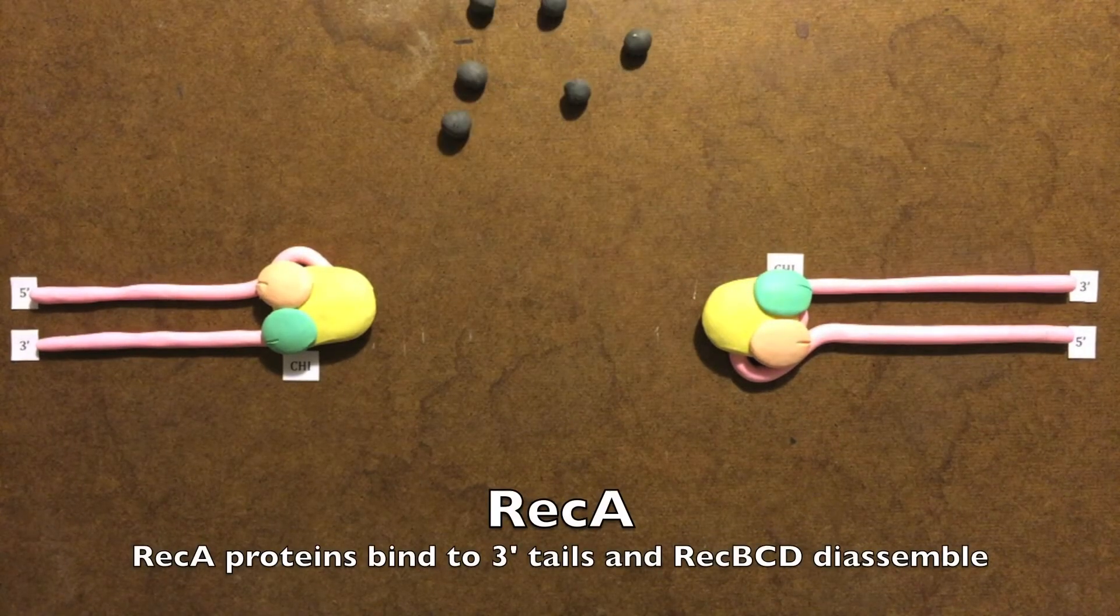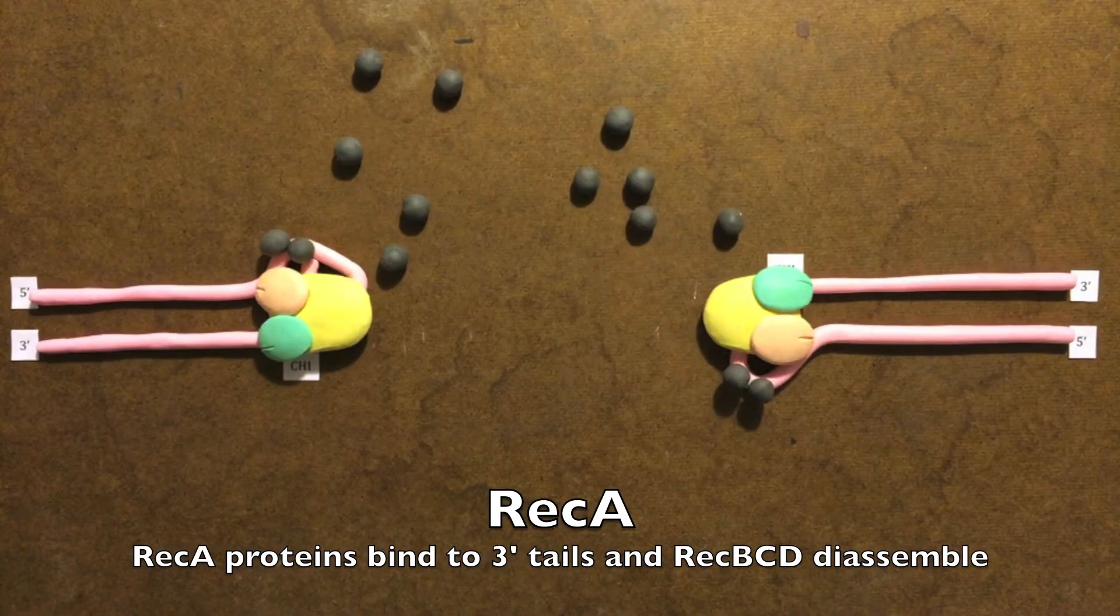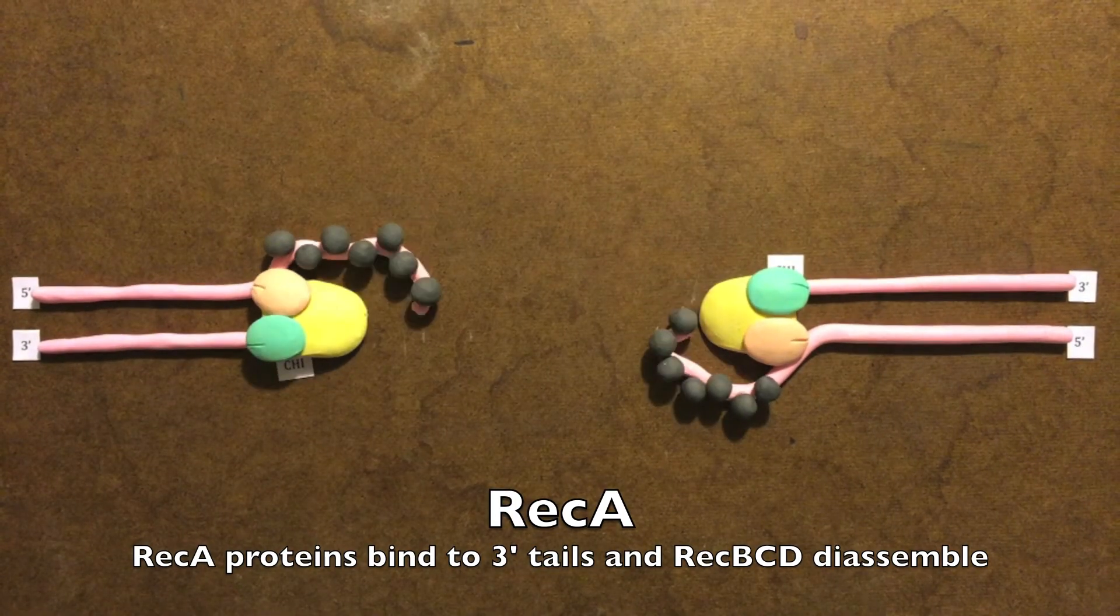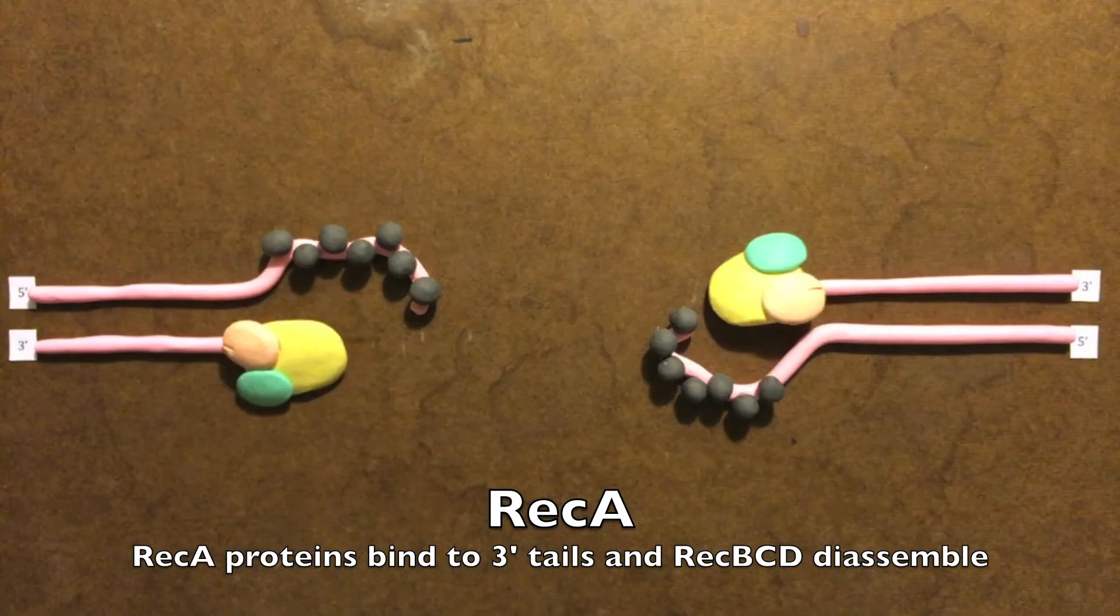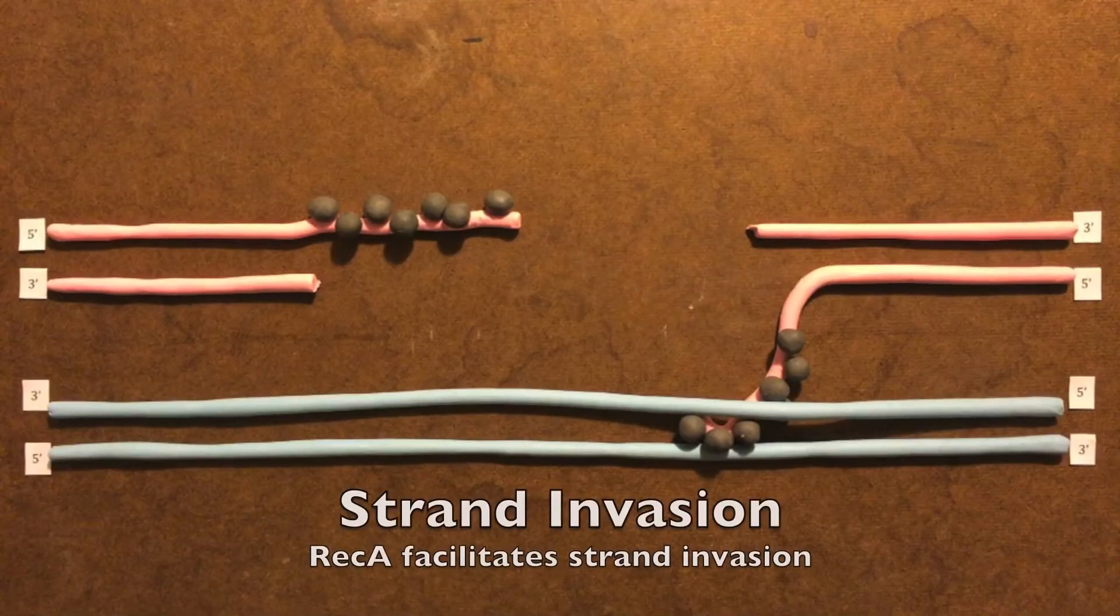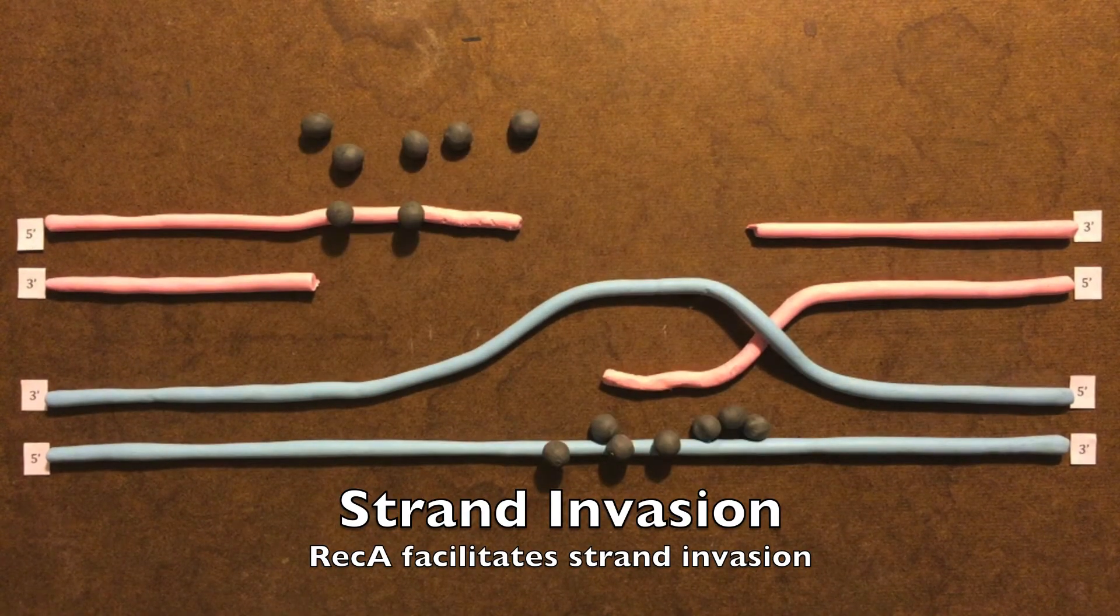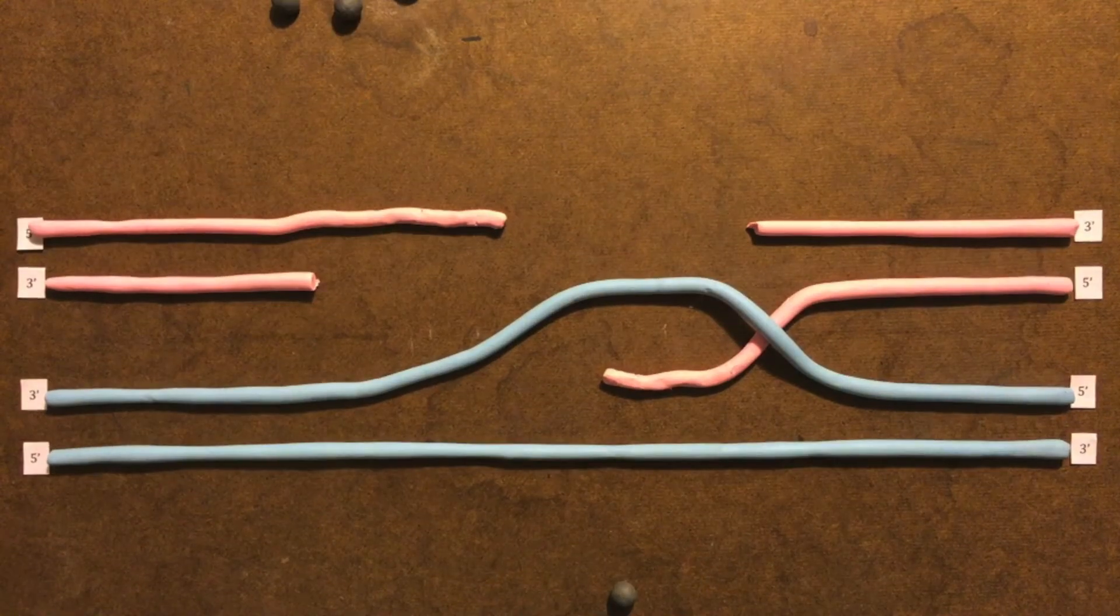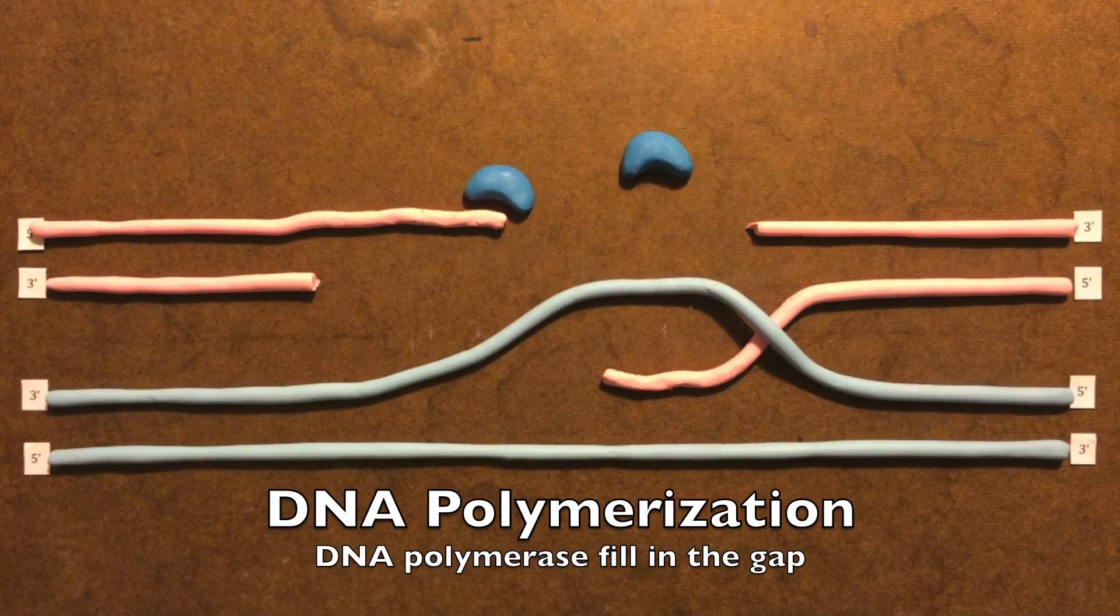RecA proteins are strand exchange proteins that play a major role in homologous recombination. They coat the single-stranded DNA by interacting with the RecB subunit. RecB loads RecA onto 3' tails. Once they are loaded, RecBCD disassembles. RecA facilitates strand invasion. Short base pairing between the two homologous DNA are formed and heteroduplex DNA is generated.